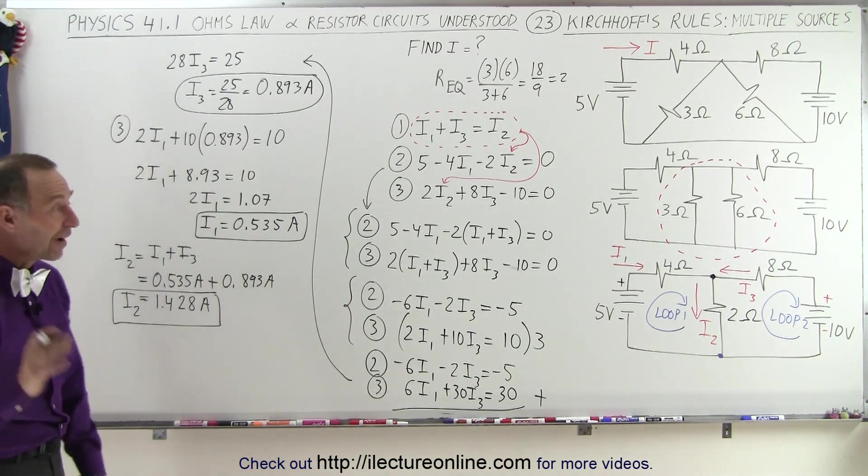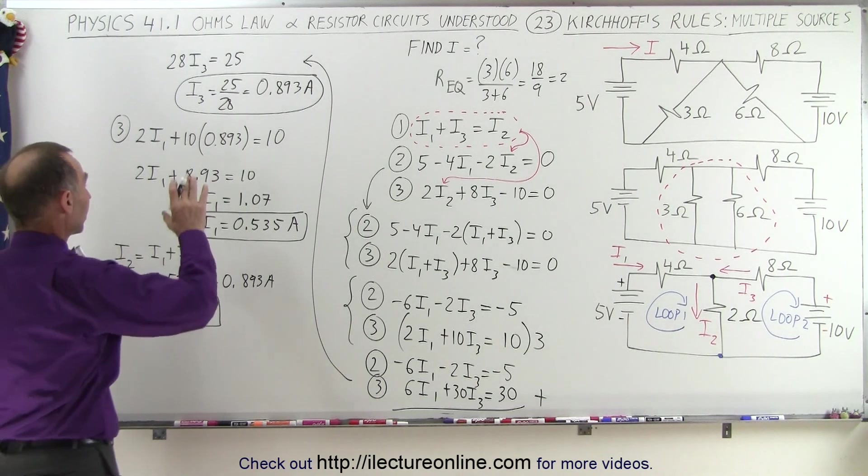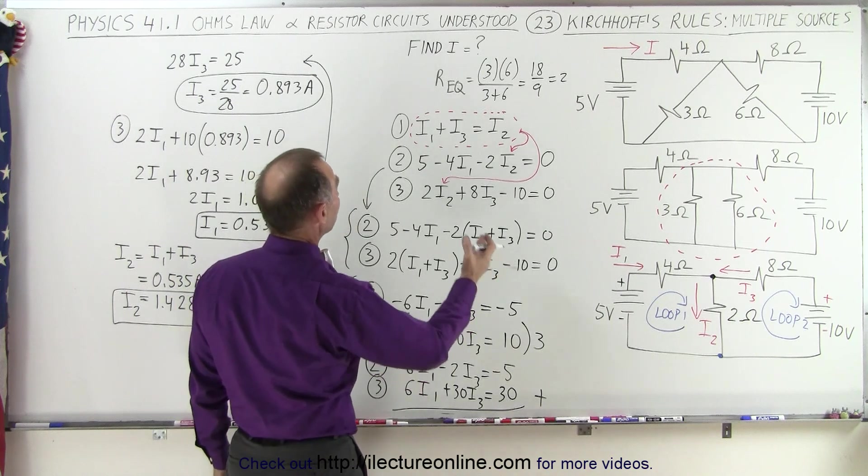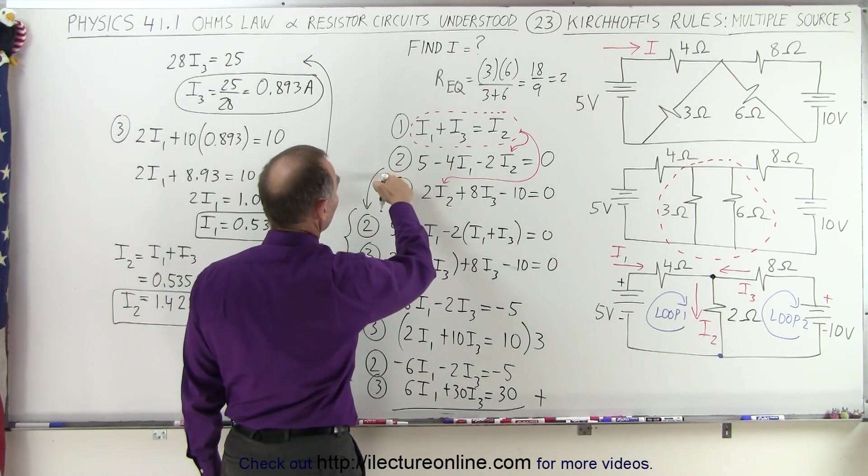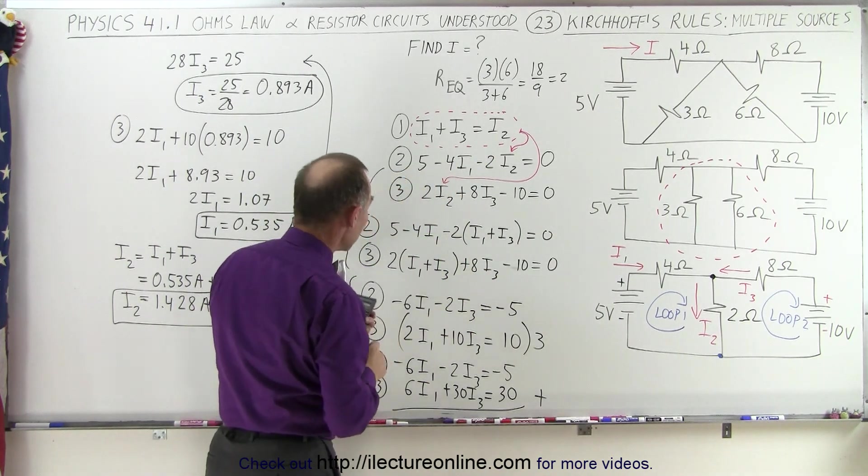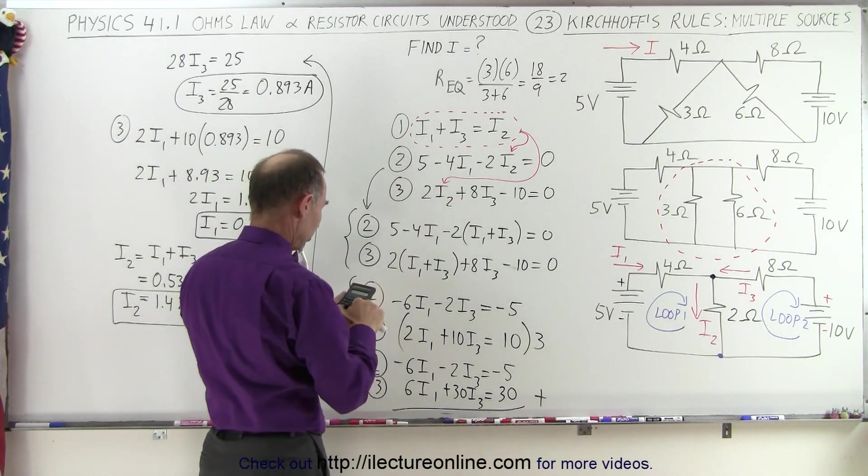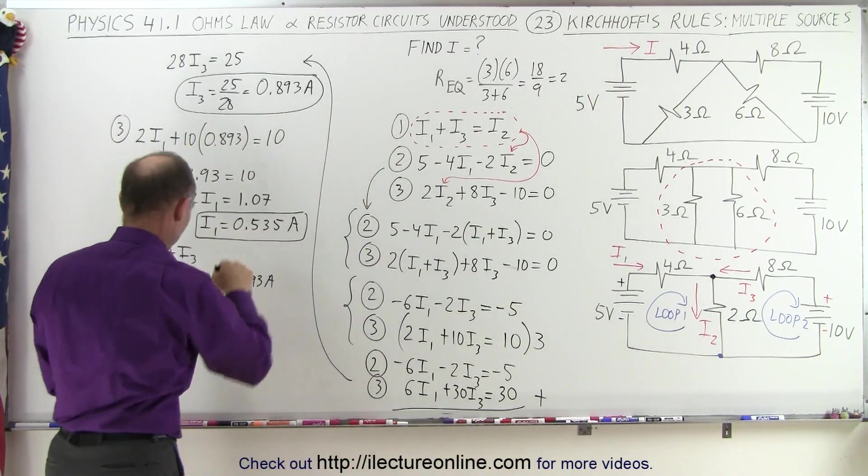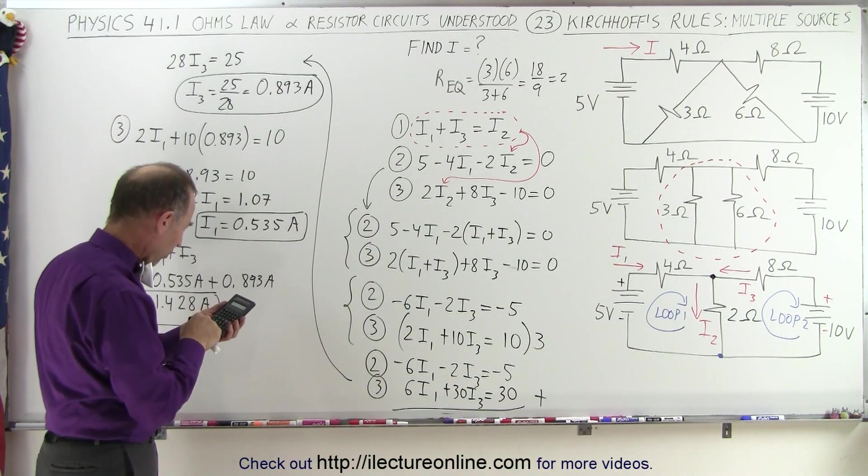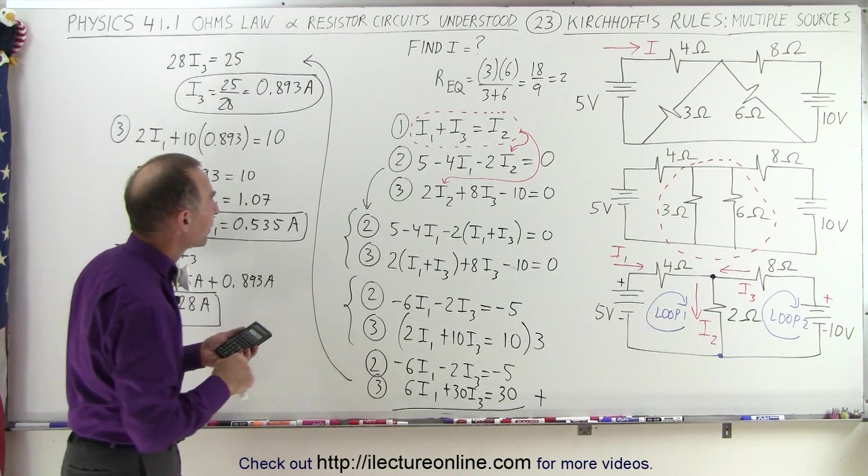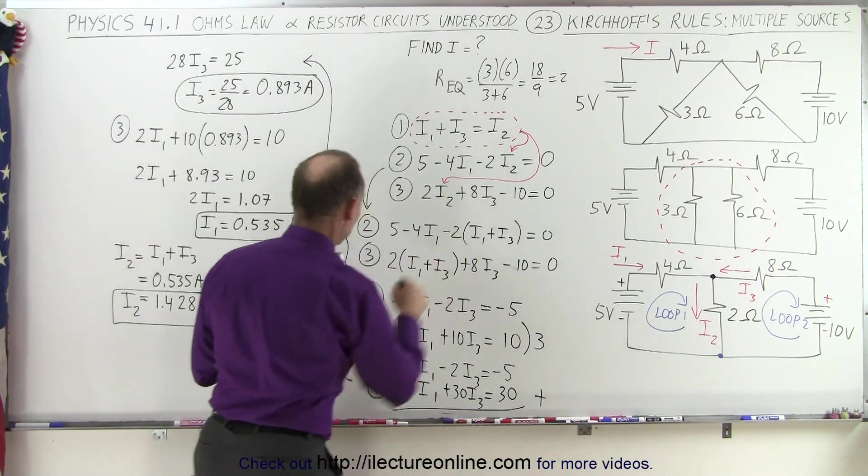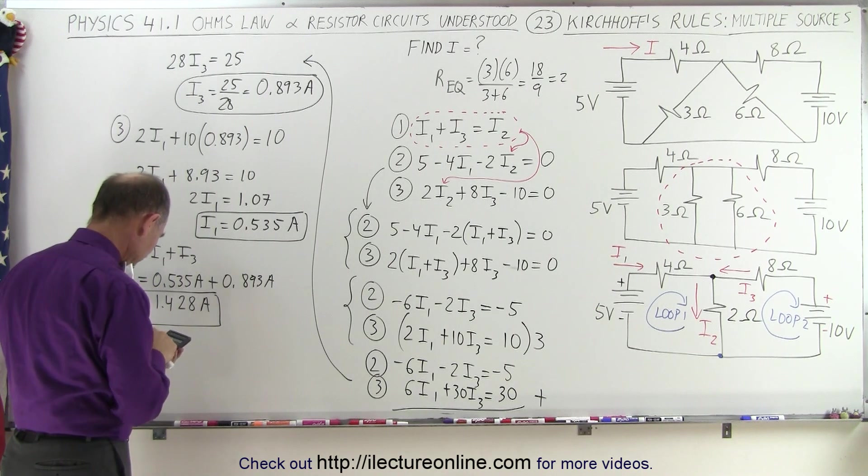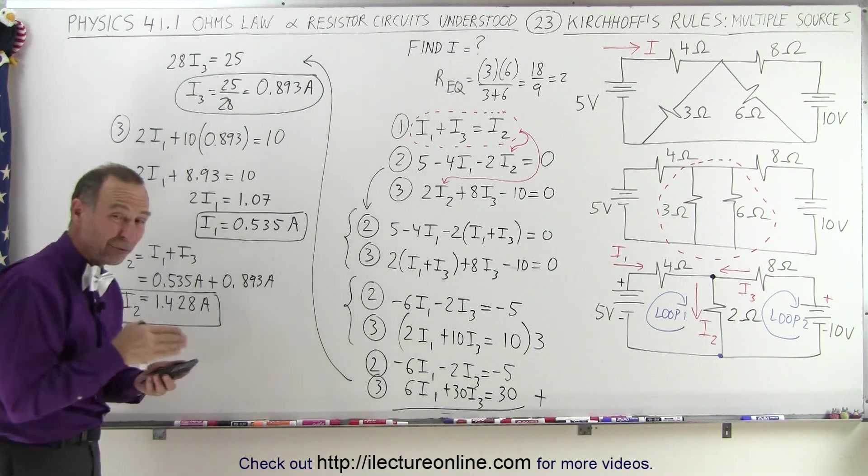And finally, what we're going to do is we're going to plug those three values for I1, I2, and I3 back into one of the two equations, or maybe both of them. So let's plug them back into 2 and 3 to see if that is correct. So here, using equation number 2, we have 5 minus 4 times I1, which is right here. So minus 4 times 0.535, and minus 2 times I2, minus 2 times I2, which is 1.428, equals, and I get a number very close to 0, which is just a slight rounding error.